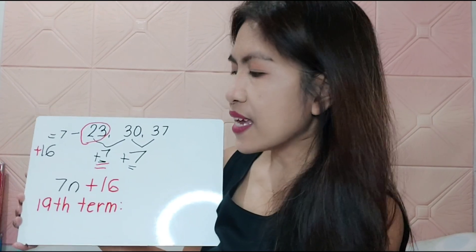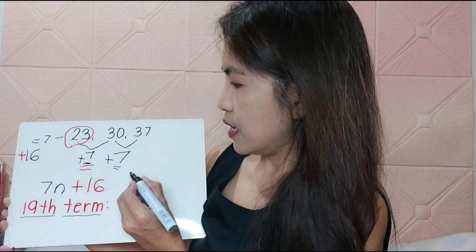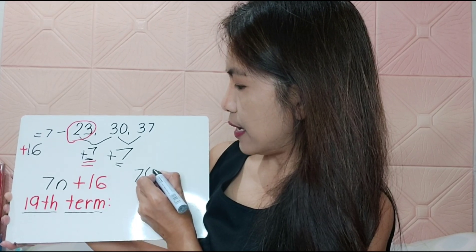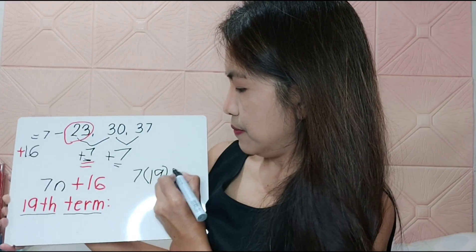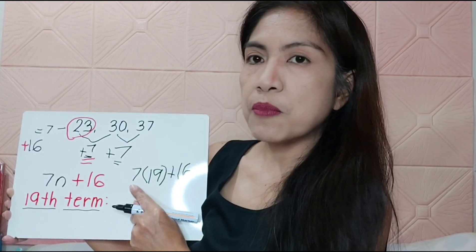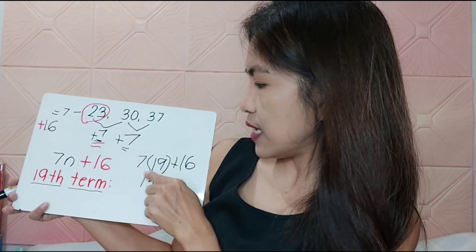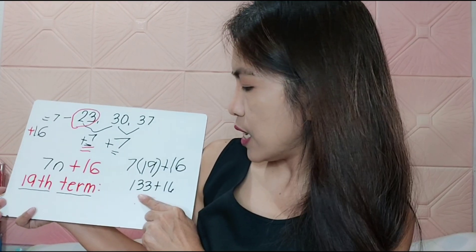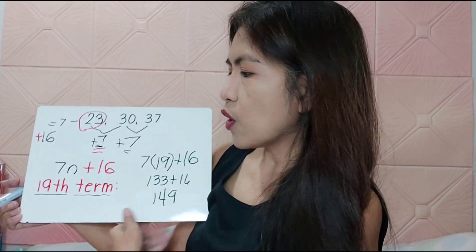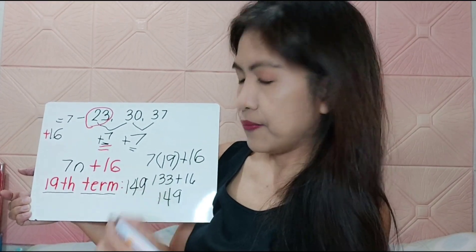Now, if you are asked to get the 19th term, we're going to have 7 times 19 plus 16. So we multiply 7 times 19 to get 133, then add 16, which gives us 149. So your answer for the 19th term is 149.